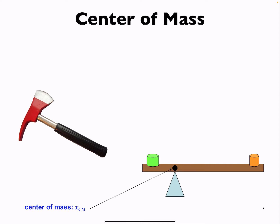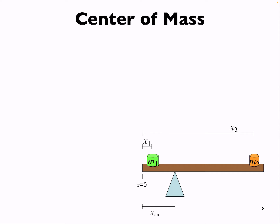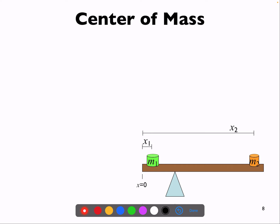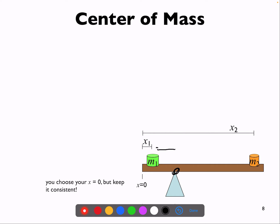Thinking about this mathematically, we define this point as the center of mass, which we'll call X_CM. We set up a coordinate system, call this zero, then X1 is the distance to our first mass, X2 is the distance to our second mass, and X_CM is the distance to our center of mass from zero. You can choose your own zero, but you have to pick a coordinate system and stick with it.